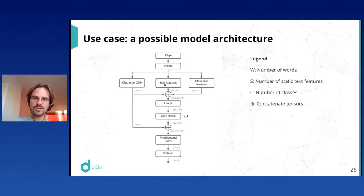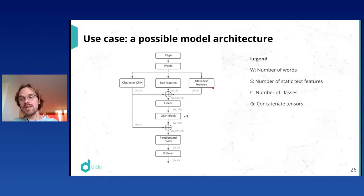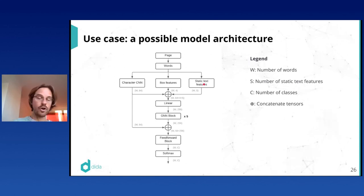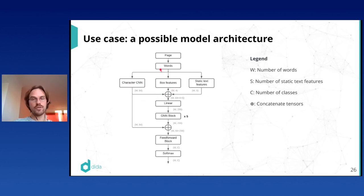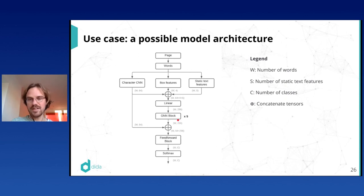And features from the text of the word itself. You could hand-engineer features like: is this a purely numerical word, is it alphanumerical, is it in a list of common words like month names or common header words? Or you could design a character CNN that learns useful features on the fly. For each word, you concatenate these things to get a feature tensor, maybe pass through a linear layer to normalize the size, then feed into a couple of GNN blocks — like the one I described — with dropouts, batch normalization, and skip connections to help with convergence.